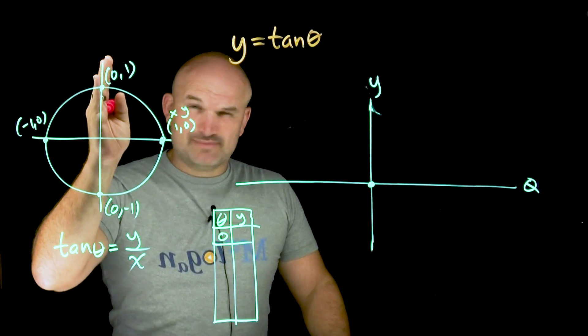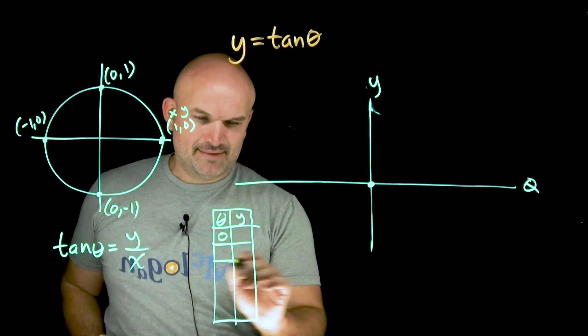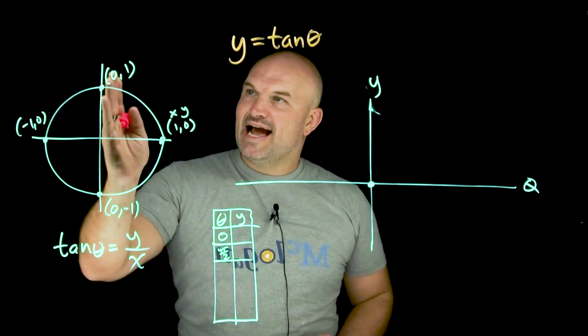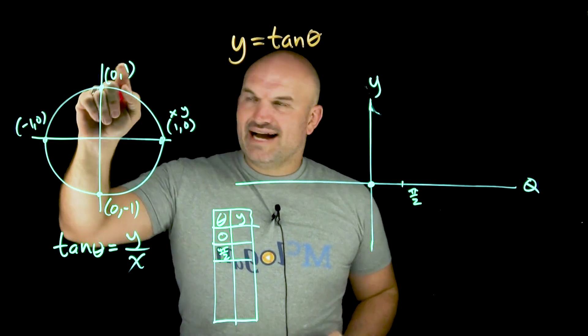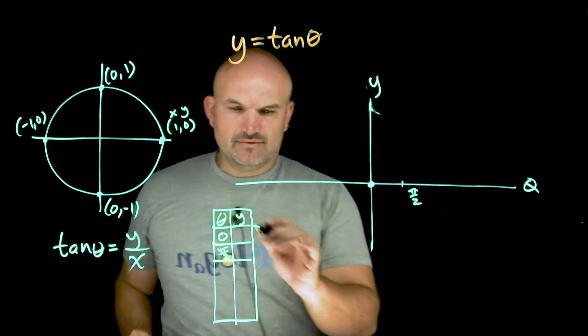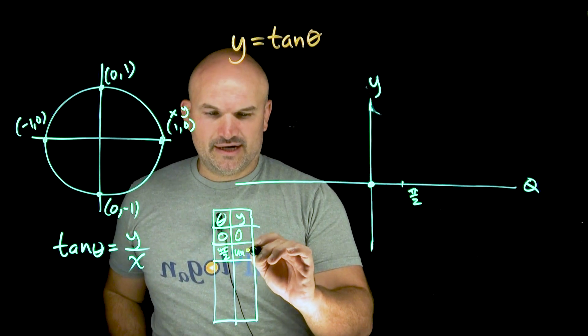The next point here we could say is pi halves or 90 degrees. I prefer radians. So we'll do pi halves. So at pi halves, we're at one over zero, right? So let's go here. Well, guys, we know one over zero, you can't divide by zero, right? So therefore that is going to be undefined.